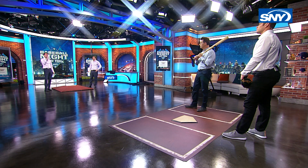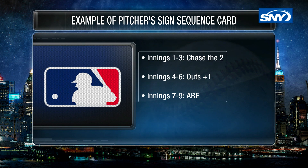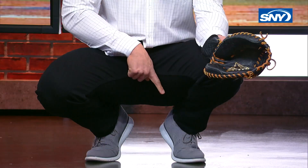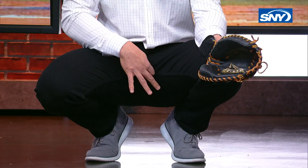We're going to show you at home some of the sequences that Anthony is talking about. They seem so simple and easy, because you've done it and dealt with pitchers who know these things. Give us a sense of what these mean: innings one through three, 'chase the two'; innings four through six, 'outs plus one'; innings seven through nine, 'ABE.' So it's literally as simple as — I tried to condense the words so it'd be easy to fit on a card. 'Chase the two' is exactly that.